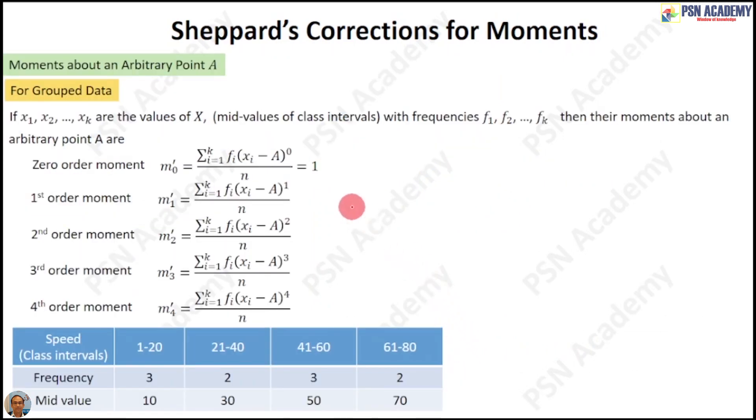For the computation of moments about an arbitrary point, origin, or mean with grouped data, we consider the mid-values of the class intervals. The class interval starting from 1 and ending at 20 has a mid-value at 10. Similarly, from 21 to 40, the mid-value is at 30.